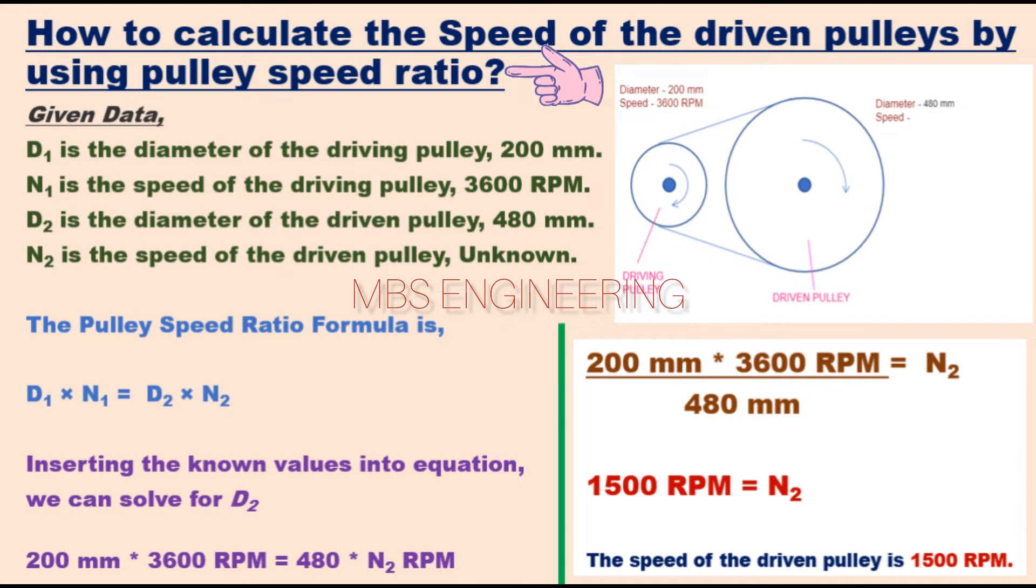Next, let's understand how to calculate the speed of a driven pulley using the pulley speed ratio formula. For this, we need to consider the following data as per the snaps.